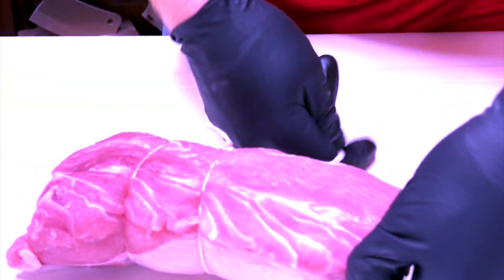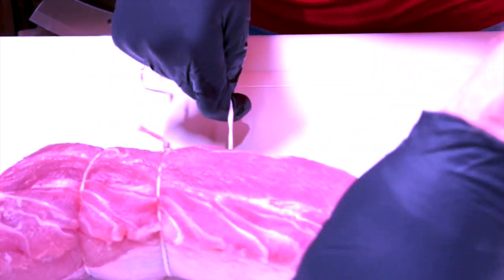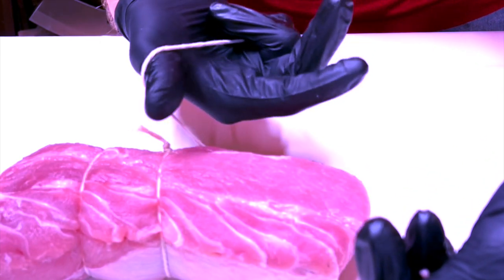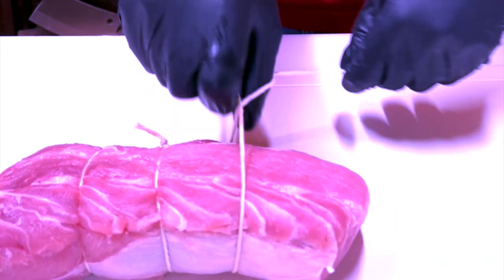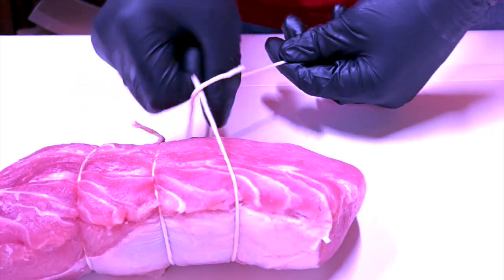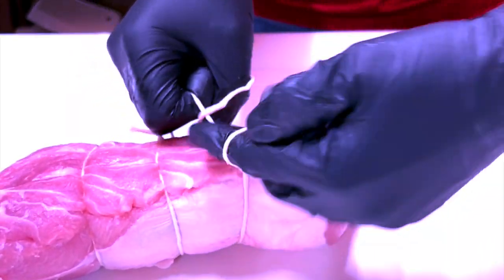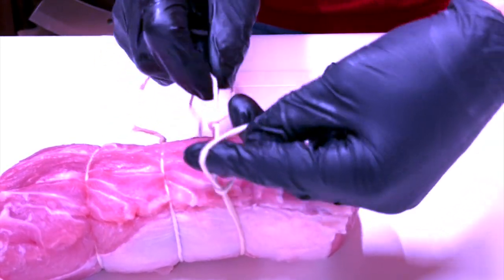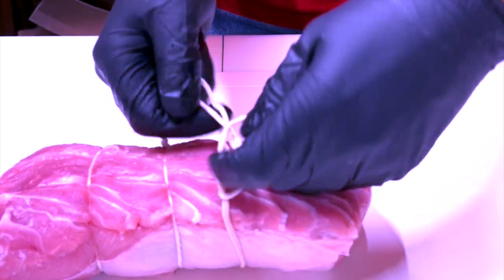One more time. Put the string on the bottom, even it out. We like even spacings going across. String on this side of the thumb, spin it. That's all we're doing, spinning it, twist it. As you can see, all we did was twist it, take it back through.